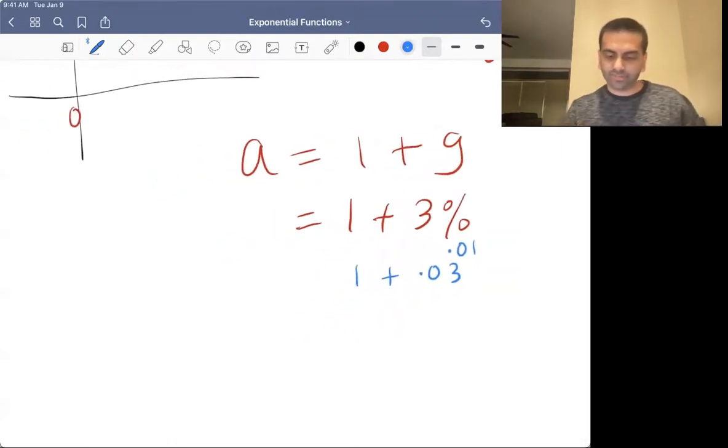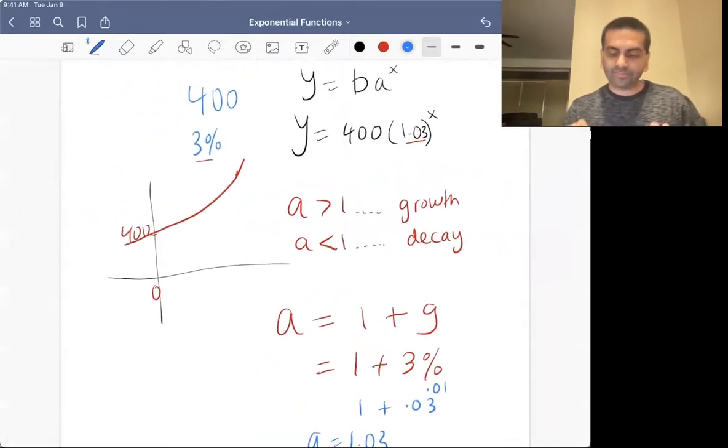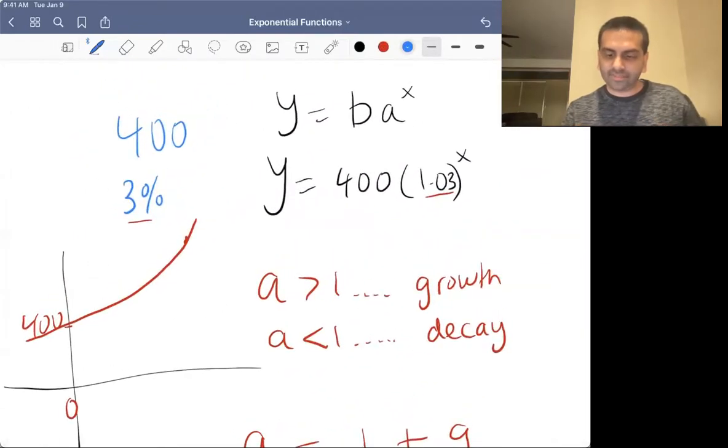So 3% is just 0.03. So really, 1 plus 3% is just 1.03. So in either case, our A value, that's how we get that 1.03. And that's how we know that this function is going to be 400 times 1.03 to the X.